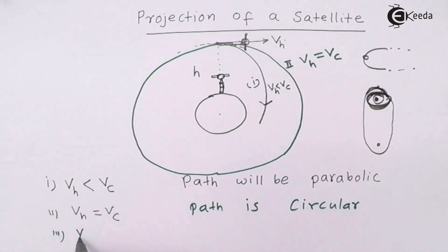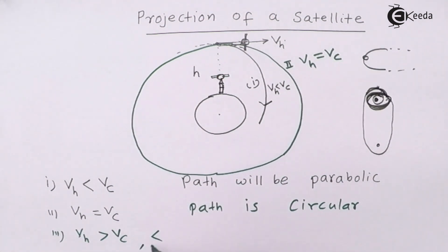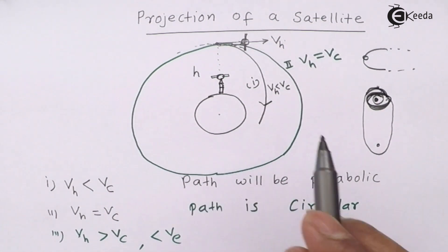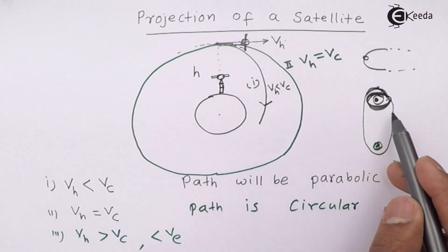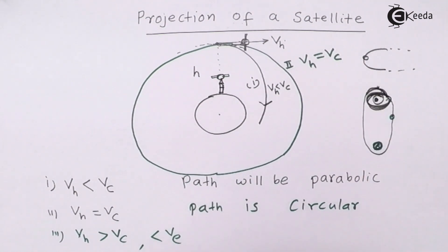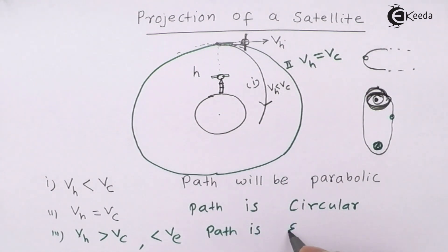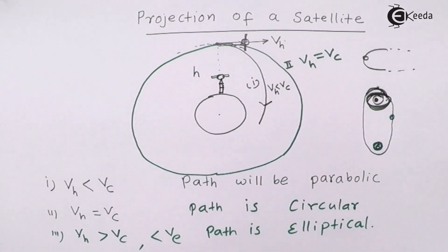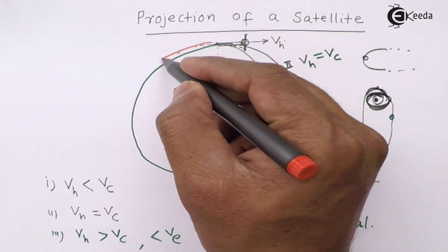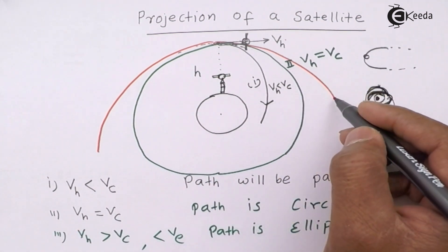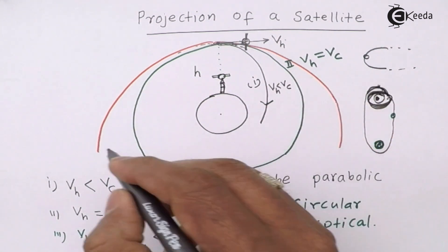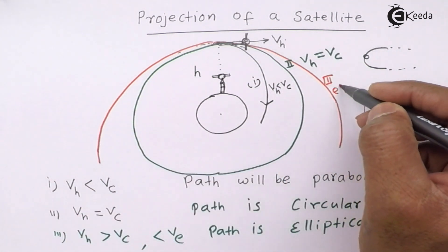The third case: if the horizontal velocity is greater than the critical velocity but less than the escape velocity, the satellite follows an elliptical path. Earth is at one of the foci, and the satellite follows the ellipse without intersecting Earth's surface. You do not need to draw the entire ellipse in an exam — an incomplete elliptical path with a label is sufficient.